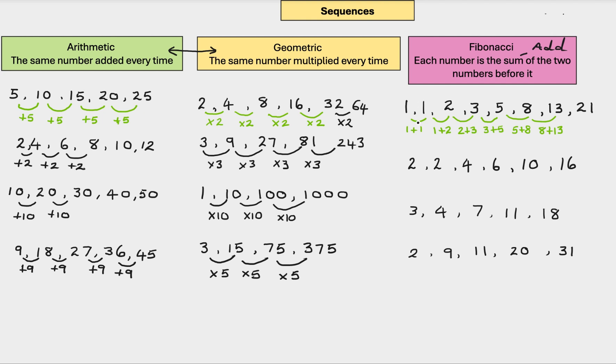So, each number you add of the two numbers before it. So, 1 plus 1 is 2. So, now you're doing 1 plus 2 equals 3. 2 plus 3 equals 5. 3 plus 5 equals 8. 5 plus 8 equals 13. 8 plus 13 equals 21. So on and so forth.